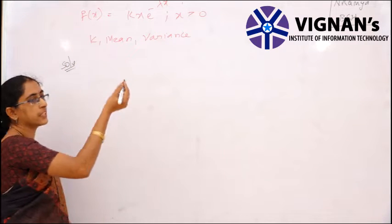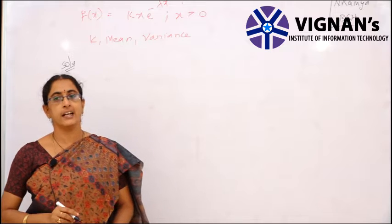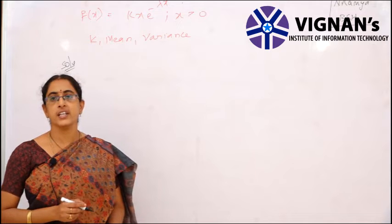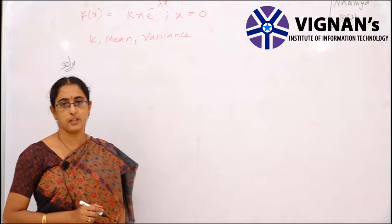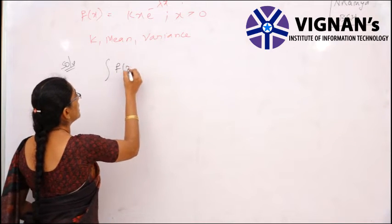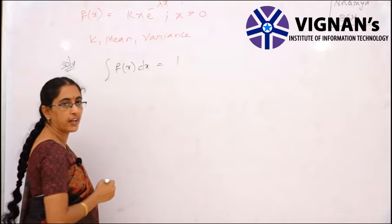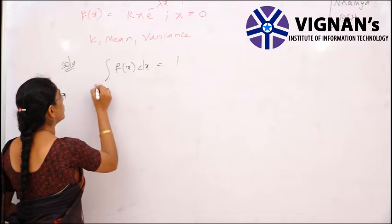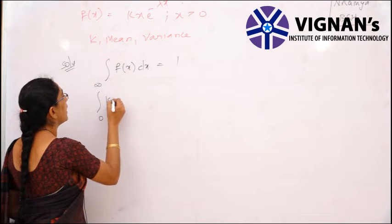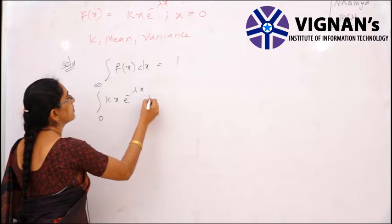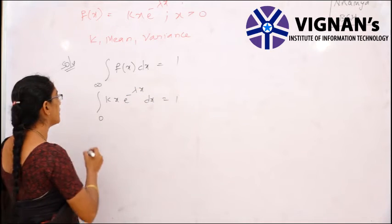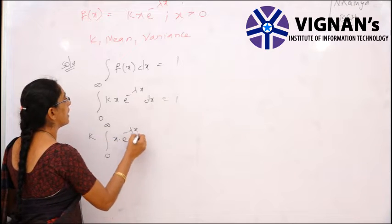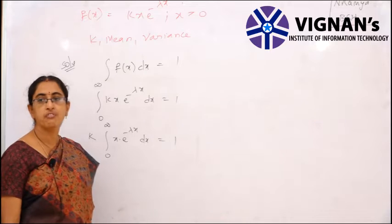To find the value of k, the ultimate condition — whether the variable is discrete or continuous — is that for discrete: Σp(x)=1, and for continuous: ∫f(x)dx=1. So we use the condition ∫₀^∞ k·x·e^(-λx) dx = 1. Since k is a constant, bring it outside: k·∫₀^∞ x·e^(-λx) dx = 1.